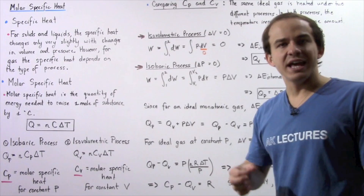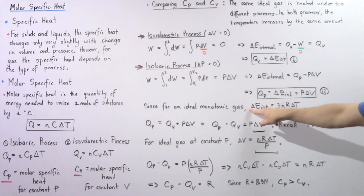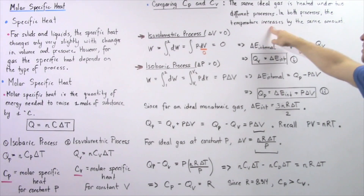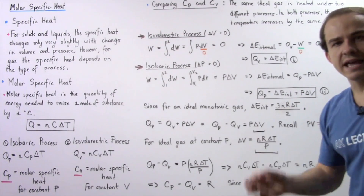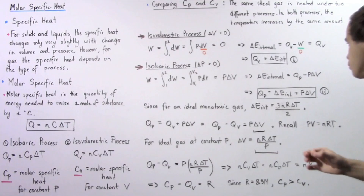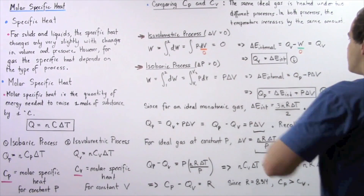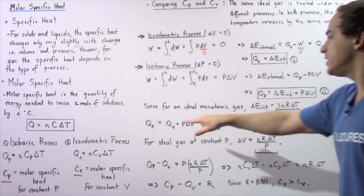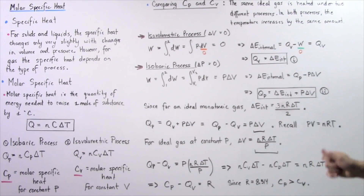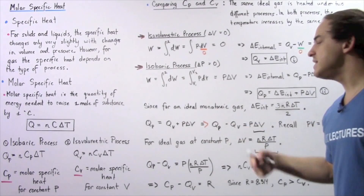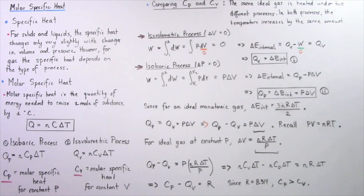Because we're dealing with an ideal monatomic gaseous system, the change in internal energy is equal to (3/2) N R ΔT. Since both processes have the same temperature increase, the change in internal energy is the same for both. We can substitute equation I into equation 2, replacing ΔU with Qv, to get: Qp equals Qv plus P ΔV. Rearranging: Qp minus Qv equals P times ΔV.